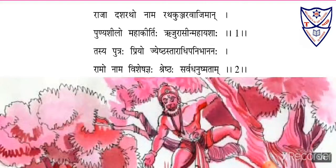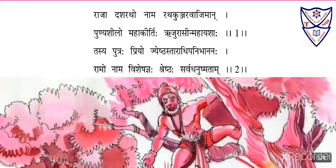Here is the first shloka, which describes Raja Dashrat. Raja Dashrat is the father of Rama. The shloka describes what Raja Dashrat possessed and who he was.